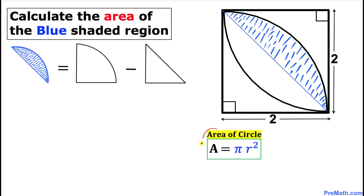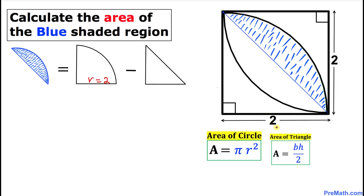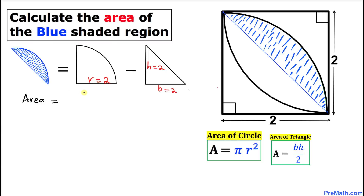Recall that the area of a circle is πr². In our case, the radius r equals 2 units. The area of a triangle is one-half times base times height. In our case, the base is 2 units and the height is 2 units as well.